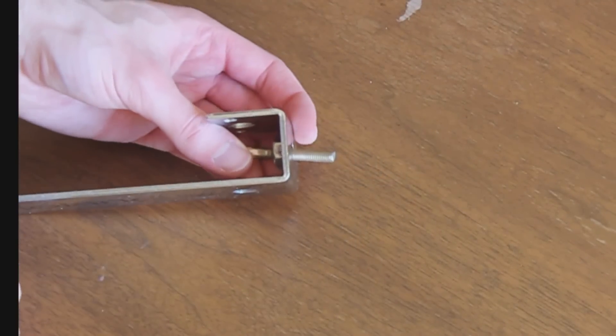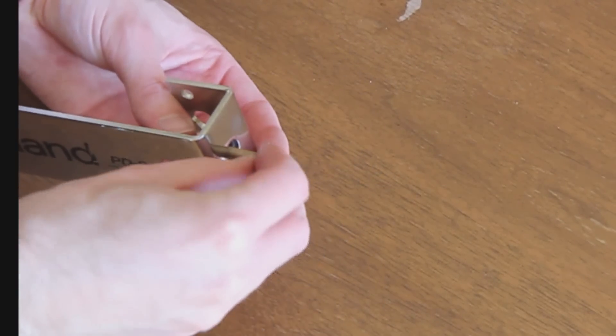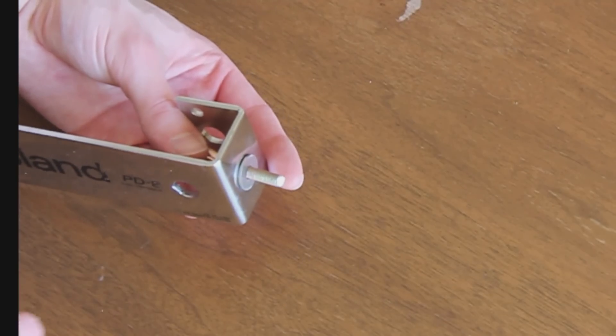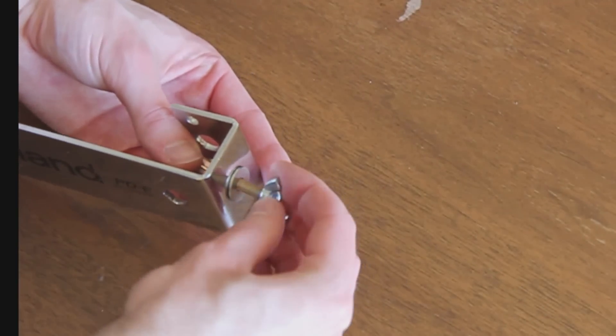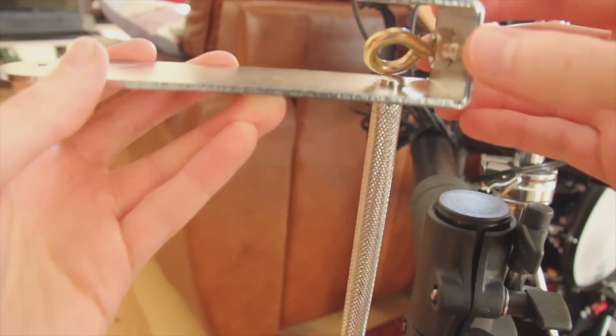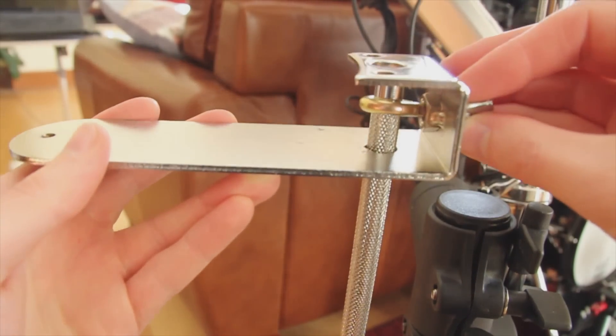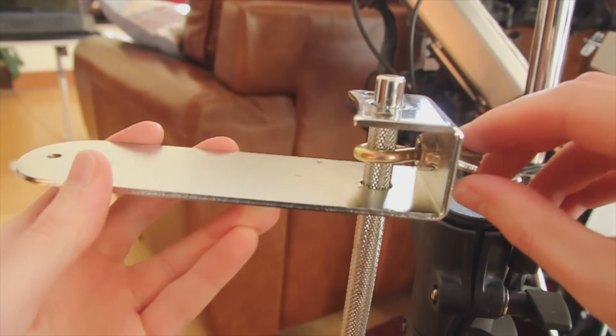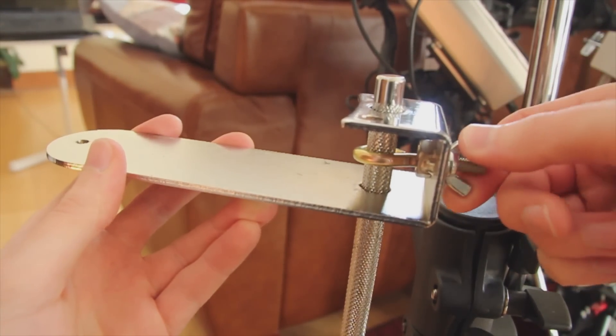Stick the screw from the inside through the hole of the metal part. Attach the washer and the wing nut. This is basically the same technique as used on the PD-125 pad from Roland.